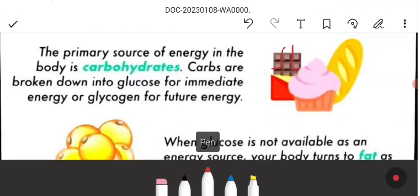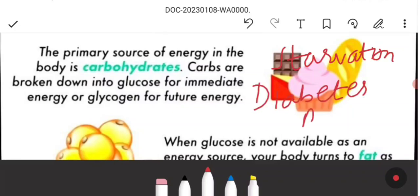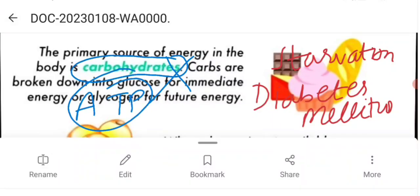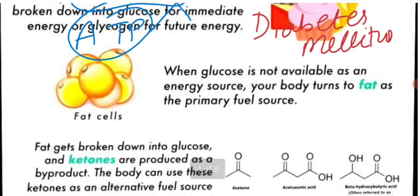In cases of starvation or diabetes mellitus, glucose or carbohydrates become depleted and unavailable. When glucose is not present, our cells still need energy to work, so the body starts to burn stored fats as the primary fuel source. Fats are broken down and ketones are produced as a byproduct, used as an alternative fuel source.